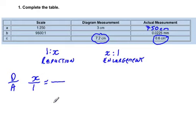And so what we're going to do then is substitute in, on the other side of our proportion, 7.2 for our diagram measurement, and 0.6 for our actual measurement.